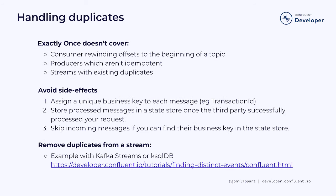Note that when you're using exactly once, there are a few cases which are uncovered — for example, a consumer rewinding offsets to the beginning of a topic, producers not being configured to be idempotent, or even streams with existing duplicates where messages were produced before exactly once was available. Let's see how we can deal with those kinds of duplicates.